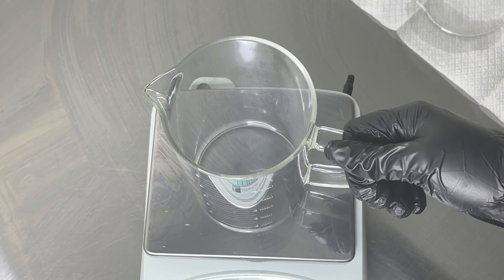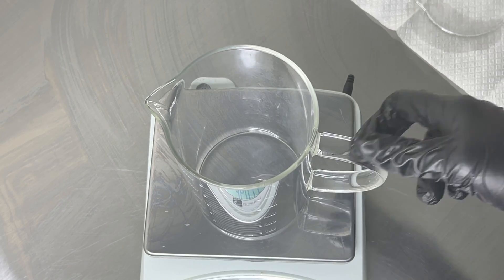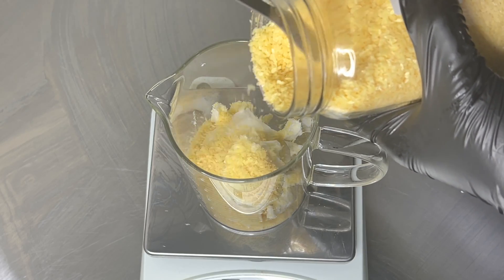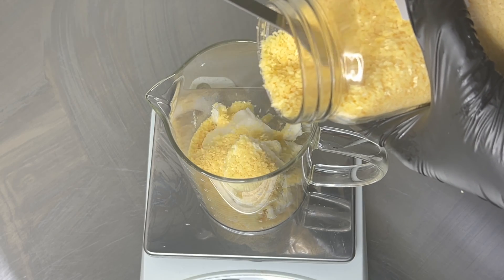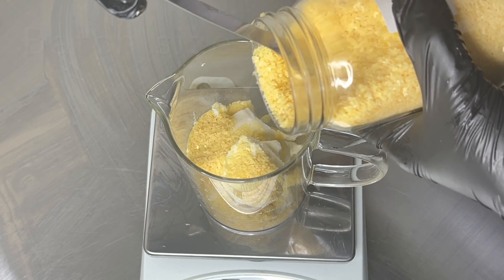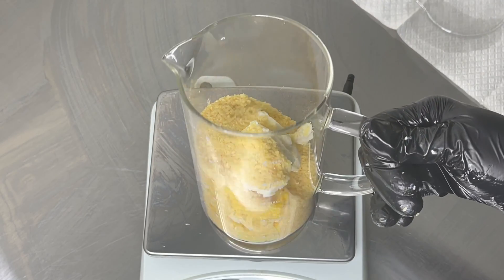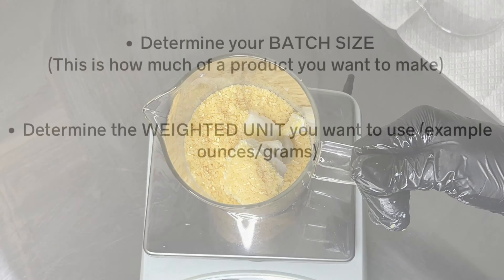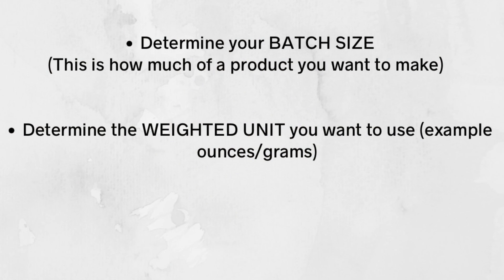That's why you need to know how to do the conversion and the calculation. The first thing you need to know is your batch size. That's the first thing you need to determine when formulating — basically, how much do you want to make. The amount of product you want to make is your batch size.